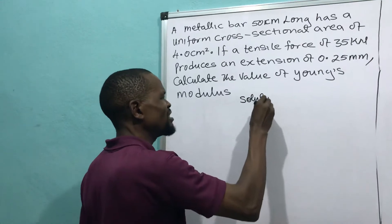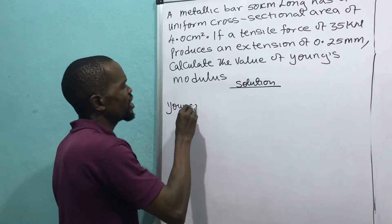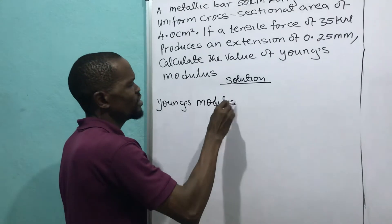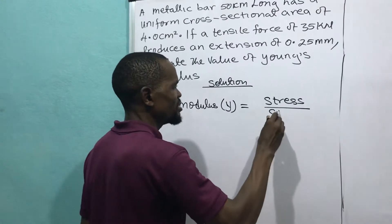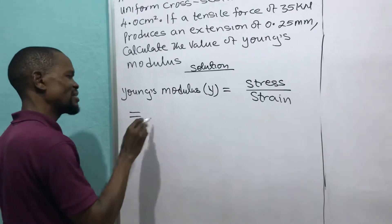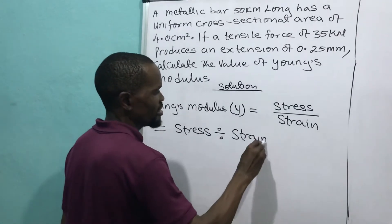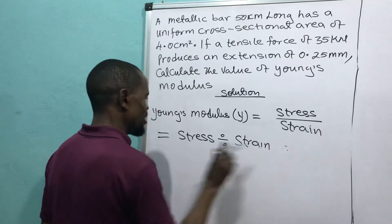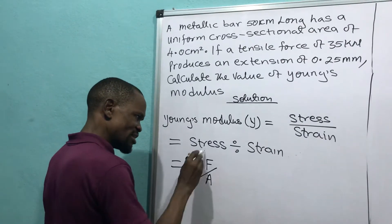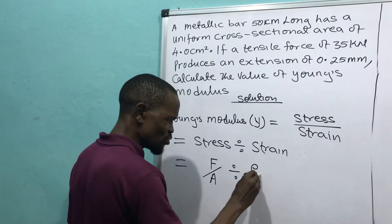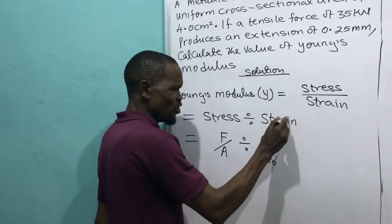This is a simple question but there are some important ingredients to follow. We know the formula: Young's modulus equals stress over strain. This can be stated as stress divided by strain, where stress is force over area, and strain is extension divided by original length.